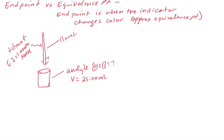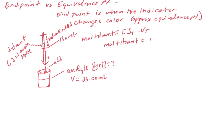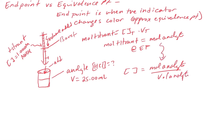Burettes are graduated, so you can measure the volume of titrant added by reading the difference in the graduations. You get the number of moles of titrant by multiplying the concentration of the titrant by the volume added. At the equivalence point, moles of titrant equals moles of analyte, so from there you can get the concentration of the analyte by dividing its moles by the accurate volume of analyte you measured at the start. That's basically the setup of a titration.